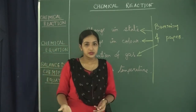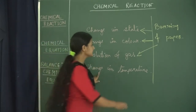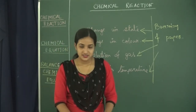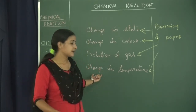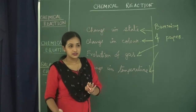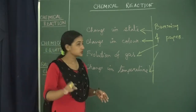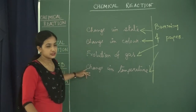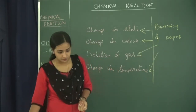The last observation is change in temperature — in a normal state we can touch the paper as it is at room temperature, but while burning or after burning the temperature increases. So we can say that for a chemical reaction to occur, the observations are: change in state, change in color, evolution of gas, and change in temperature. You can simply remember the example of burning of paper.